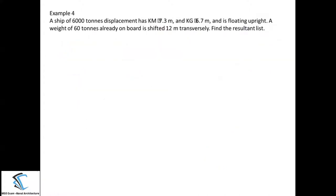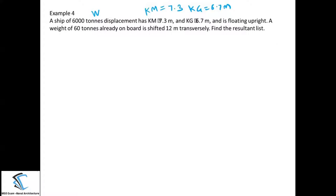Let us take one numerical to understand the concept of angle of list. A ship of 6000 tons displacement has KM of 7.3 meters and KG of 6.7 meters and is floating upright. A weight of 60 tons already on board is shifted 12 meters transversely. Find the resulting list. In this case, no cargo is being added or removed — the 60 tons weight already on board is just being shifted transversely. They have not mentioned whether it is towards starboard or port, so let us assume it is shifted towards the starboard side.